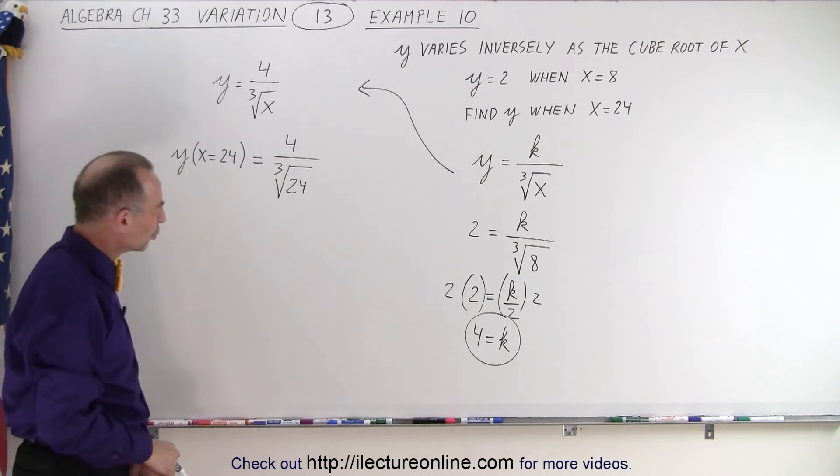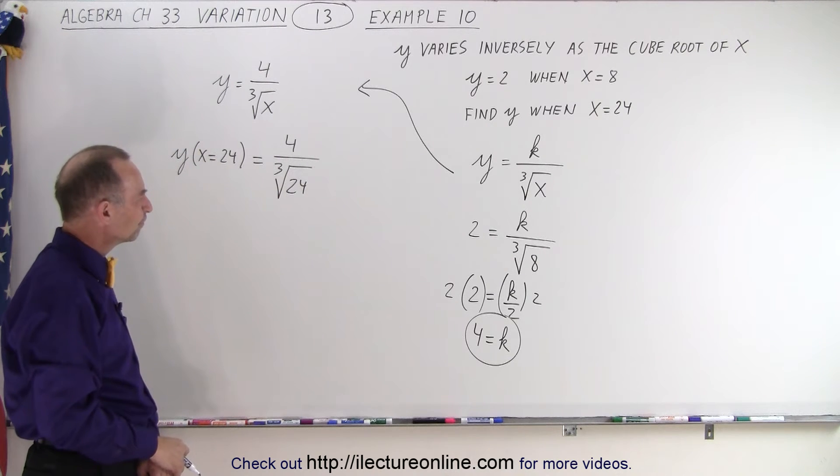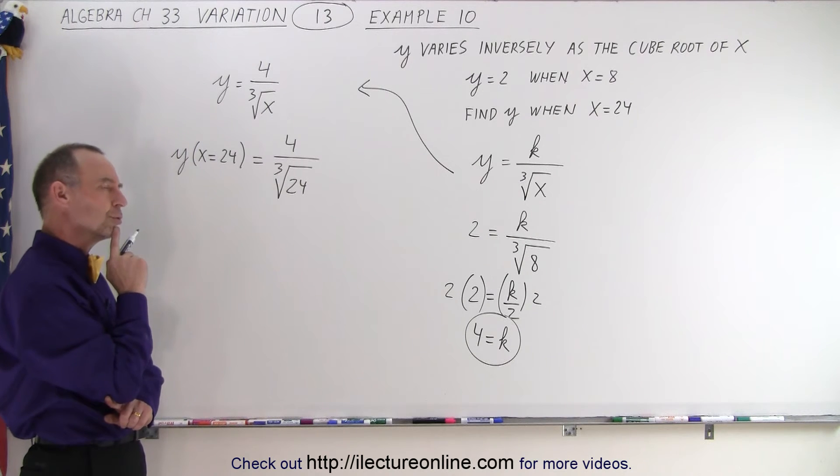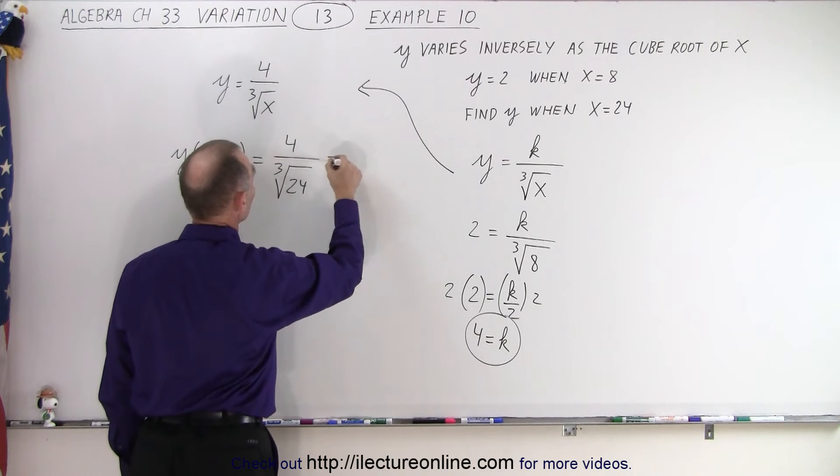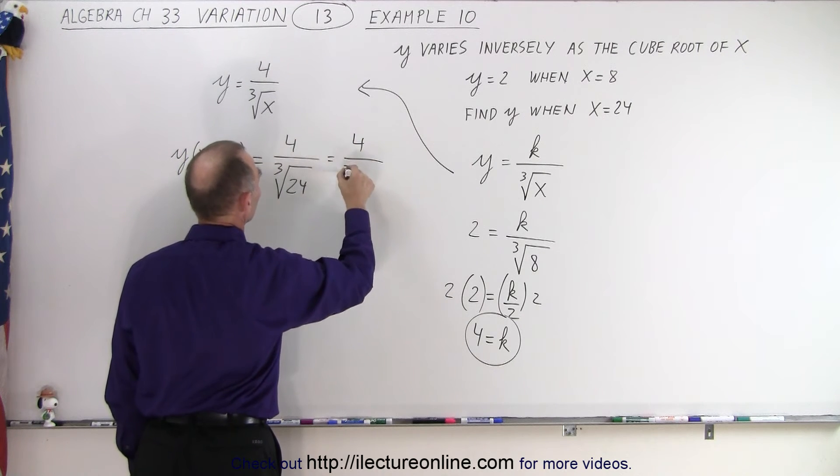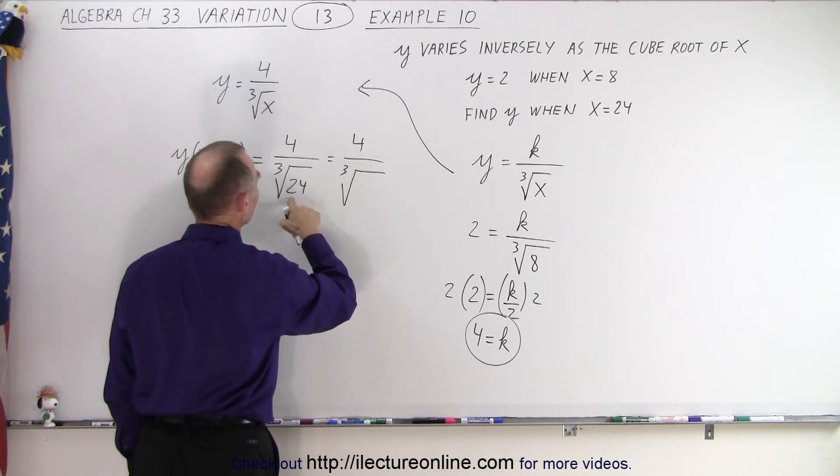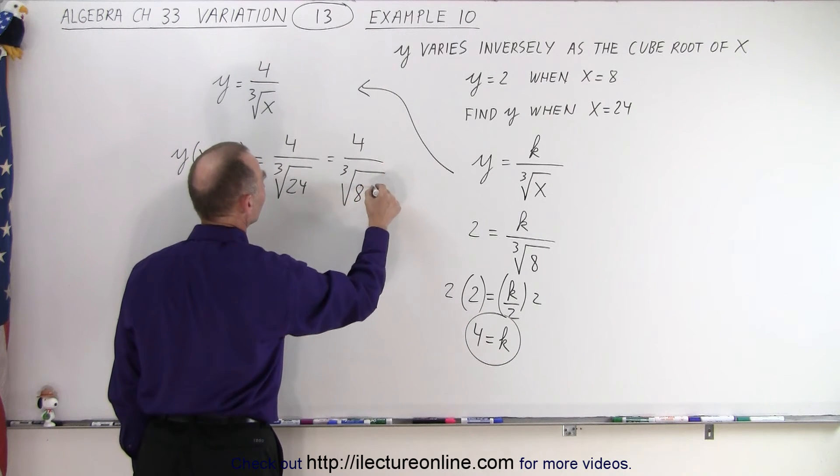So what's the cube root of 24? Well, what I'm going to do is I'm going to rewrite this a little bit. So this is equal to 4 divided by the cube root of 24 times, 24 can be written as 8 times 3.